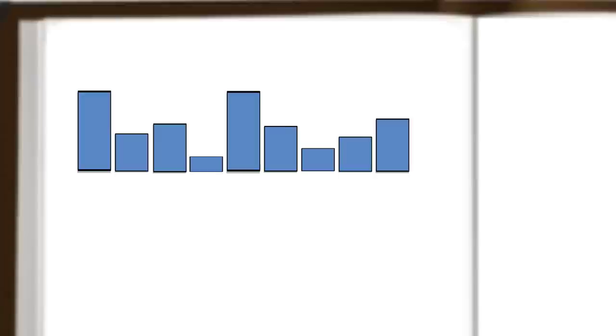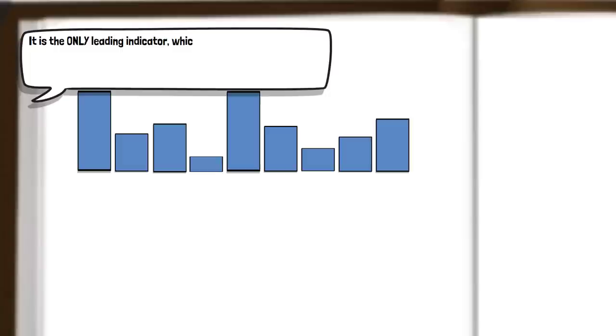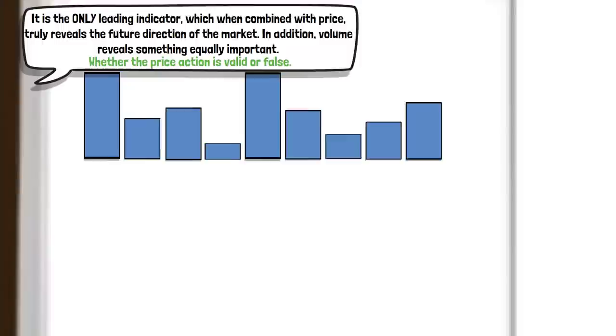Anna puts considerable emphasis on volume throughout the book and starts by saying it is the only leading indicator which, when combined with price, truly reveals the future direction of the market. In addition, volume reveals something equally important – whether the price action is valid or false.